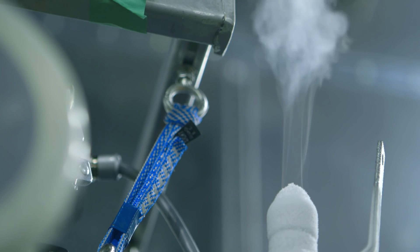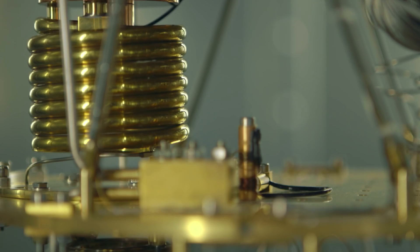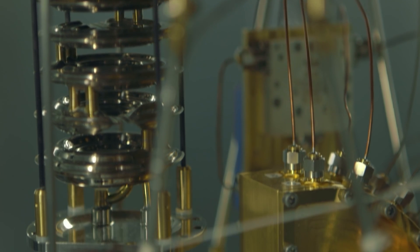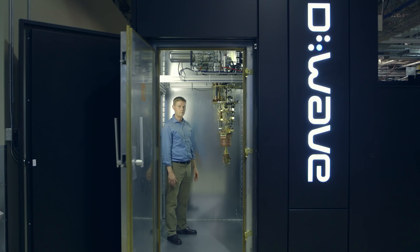This is the inside of one of our dilution refrigerators. All of this infrastructure is to basically operate the chip at a temperature that's two orders of magnitude colder than interstellar space. The processor is a quantum computer.